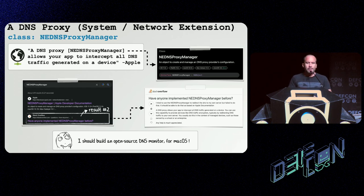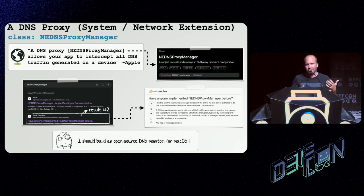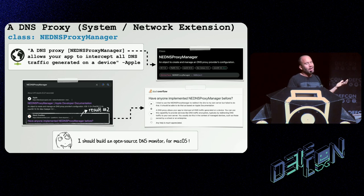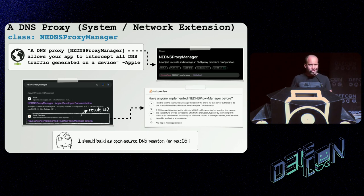To build a DNS monitor, we're going to use the NE DNS proxy manager class. This will allow our application to intercept all DNS traffic. I Googled it and there were like two hits — Apple's developer documentation describing the APIs, and a forum post asking how to do this from someone in the same boat. There's no example code and no great documentation. This is a tool I wanted to write anyway, and the tool I wrote is called DNS Monitor. It's fully open source and free on objectivec.org. When we execute it from the terminal, if we then resolve a DNS name — for example, objectivec.org via nslookup — this will generate a DNS request that we can intercept.